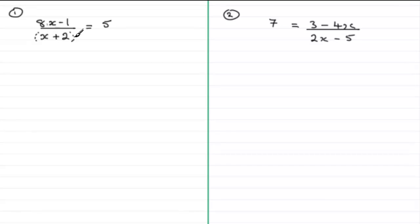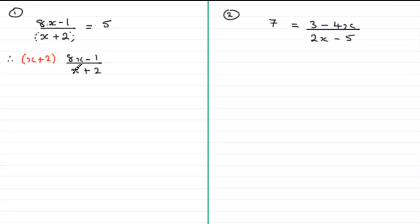When it comes to doing this one, all we need to do is multiply both sides of the equation by x plus 2. So therefore we have x plus 2 multiplied on the left-hand side: x plus 2 multiplied by (8x minus 1) all divided by x plus 2. And for the other side, we take the 5 and multiply that by x plus 2.